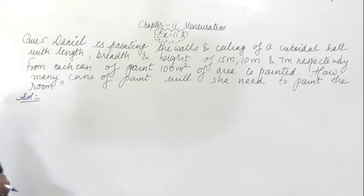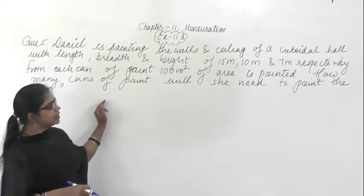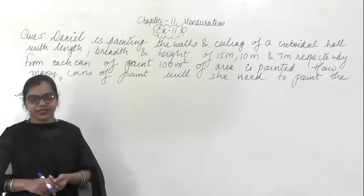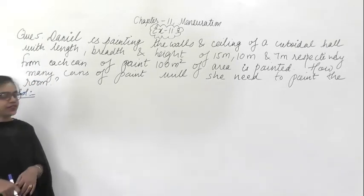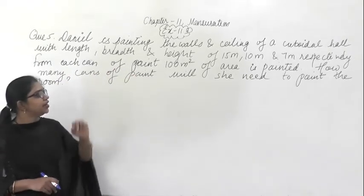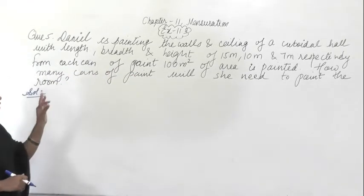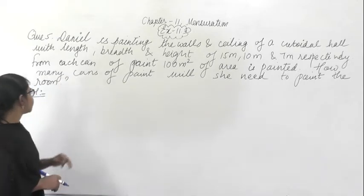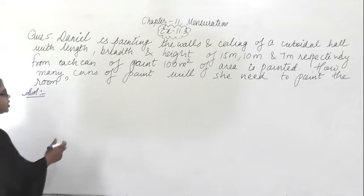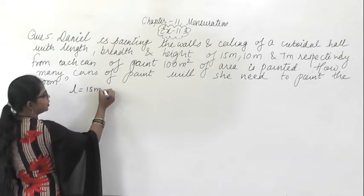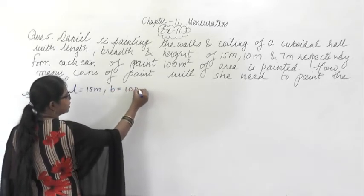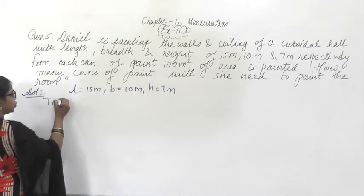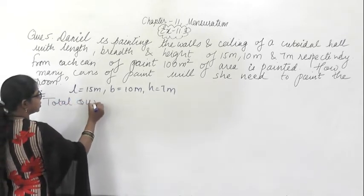This is question number 5. In this question, Daniel is painting the walls and ceiling of a cuboidal hall with length 15 meter, breadth 10 meter, and height 7 meter respectively. From each can of paint, 100 meter square of area is painted. How many cans of paint will she need to paint the room? Length is 15 meter, breadth is 10 meter, and height is 7 meter.